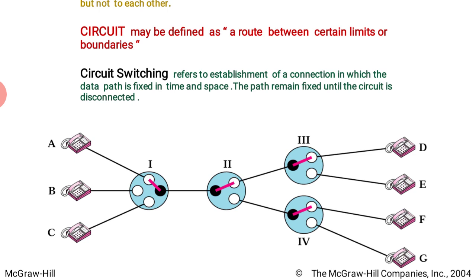Circuit switching refers to the establishment of a connection in which the data path is fixed in time and space. We have two types: time and space division. The path remains fixed until the circuit is disconnected. When you make a call to your friend, the path is finalized by the switches. When you disconnect the phone, the path is released and can be utilized for another pair of users.